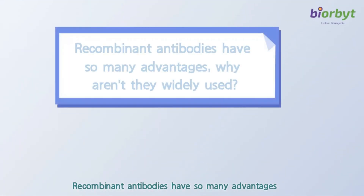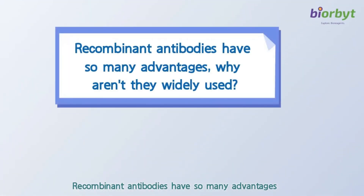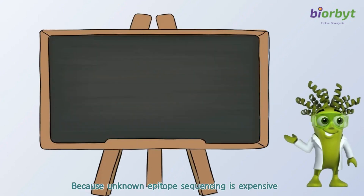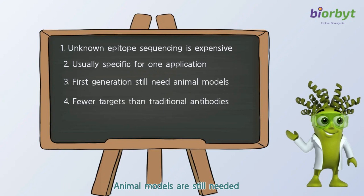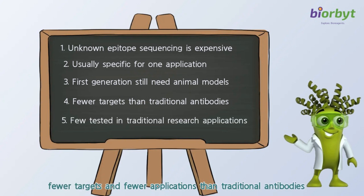Recombinant antibodies have many advantages, so why aren't they widely used? Because unknown epitope sequencing is expensive, recombinant antibodies are usually specific to one application, animal models are still needed, and there are fewer targets and fewer applications compared to traditional antibodies.